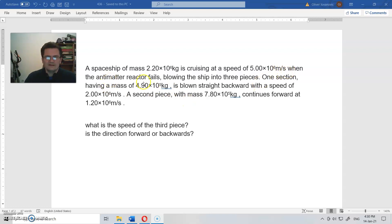When the antimatter reactor fails, blowing the ship into three pieces. One section with mass 4.9 times 10 to the 60 kilograms is blown straight backwards with a speed of 2 times 10 to the 60 meters per second. A second piece with mass 7.80 times 10 to the 50 kilograms continues forward at 1.2 times 10 to the 60 meters per second. What is the speed of the third piece? Is the direction forward or backwards?